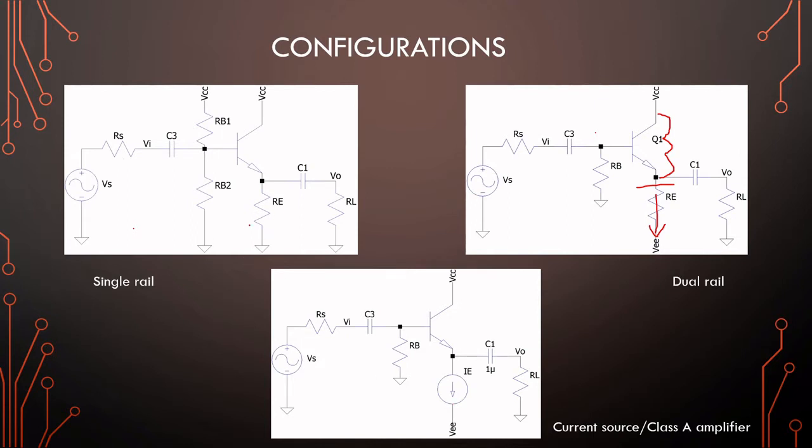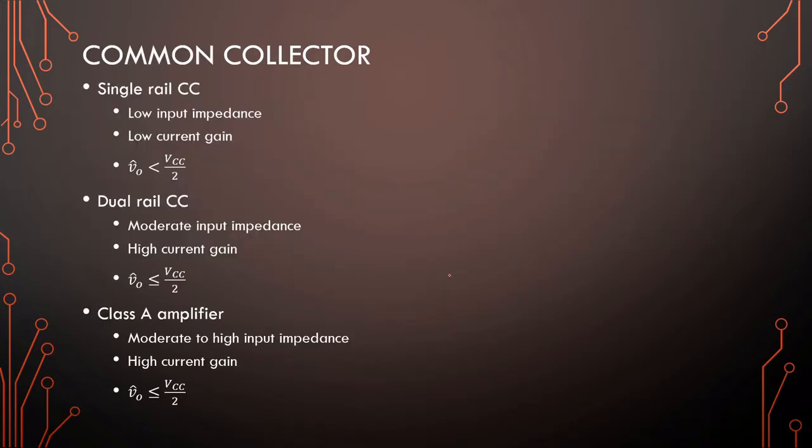The emitter resistor will be replaced with a current source and we'll have a base bias which will have increased input impedance. The issues with single rail: low input impedance, low current gain, and the peak output voltage will always be smaller than VCC/2. We can never reach the rails.